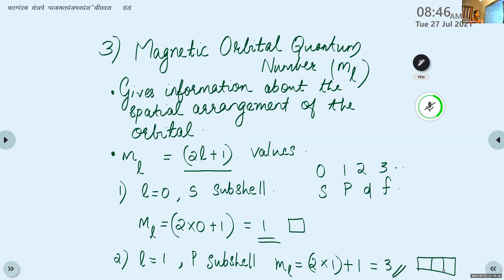To summarize: the principal quantum number gives information about the size and energy of the orbitals and the main shells — K, L, M, N — according to their number. If n equals 1, it belongs to K shell; n equals 2, L shell; n equals 3, M shell. The azimuthal quantum number provides information about the shape of the orbital and the subshells S, P, D, F according to values 0, 1, 2, 3 respectively.